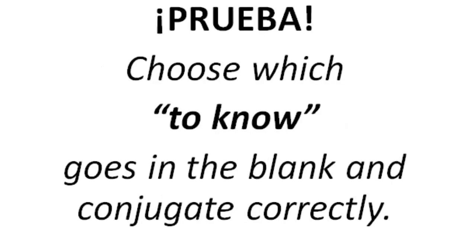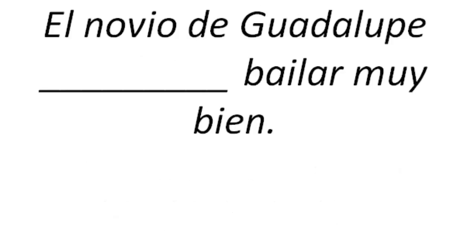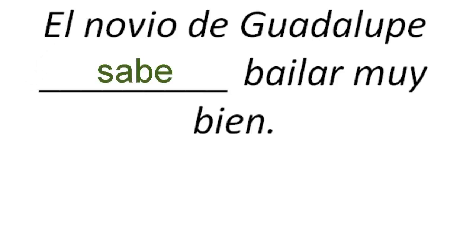So those are some quick examples — let's take a quiz, una prueba. Choose which 'to know' goes in the blank and then conjugate it correctly. El novio de Guadalupe blank bailar muy bien — knows to dance very well. The verb is saber; the conjugation for el novio de Guadalupe would be sabe. El novio de Guadalupe sabe bailar muy bien — knows how to.